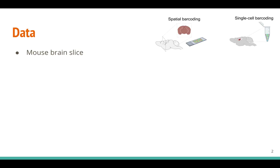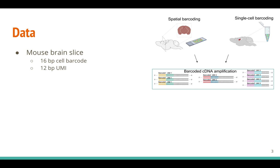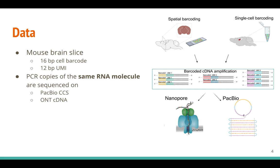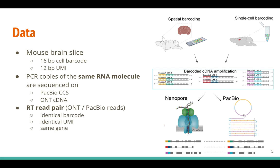I will start by describing the main features of our data. We had cDNAs barcoded by their single cell of origin or their spatial location. Each cell had a unique 16 base pair barcode and each molecule had a 12 base pair UMI. PCR copies of the same cDNA molecules were sequenced on both the PacBio Sequel2 and Oxford Nanopore PromethION. Each read pair was identified by the combination of its barcode, UMI, and the gene the molecule is mapped to.